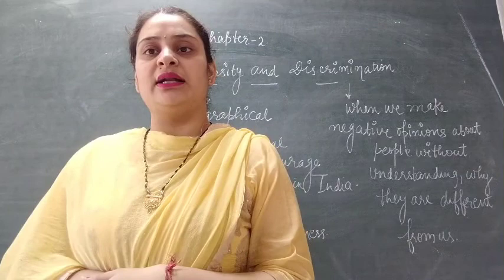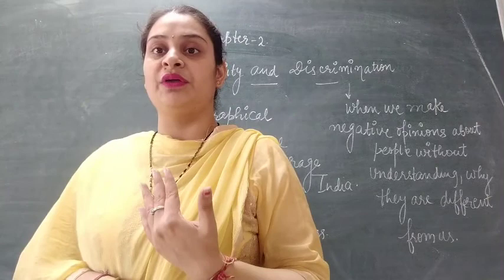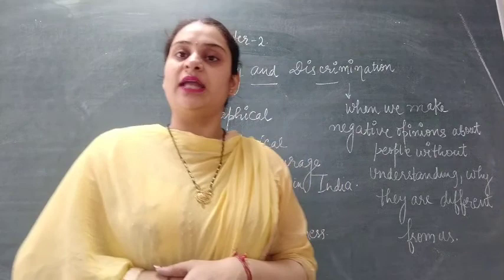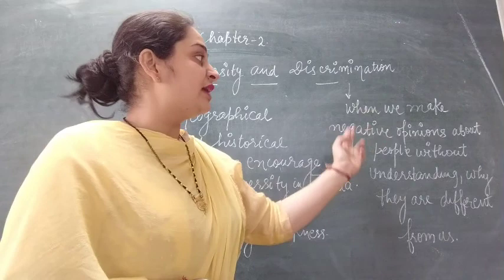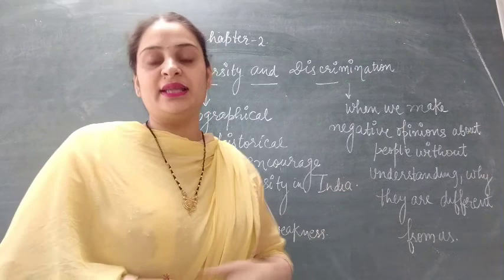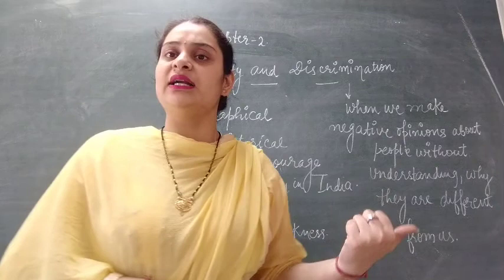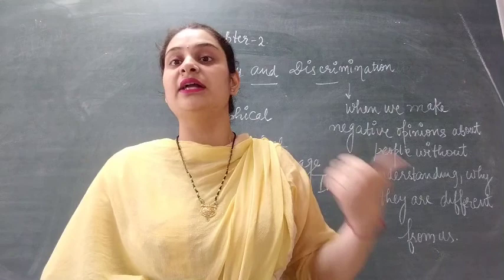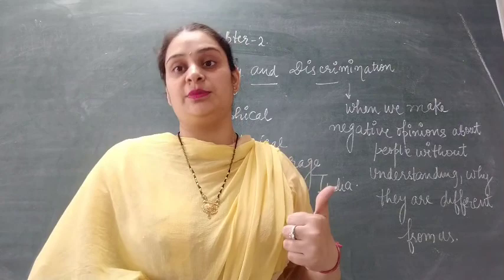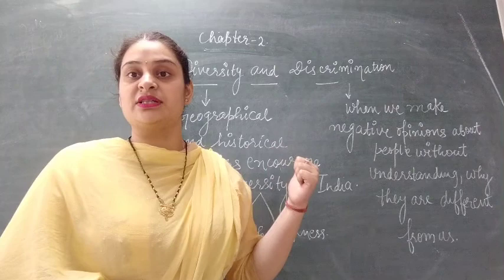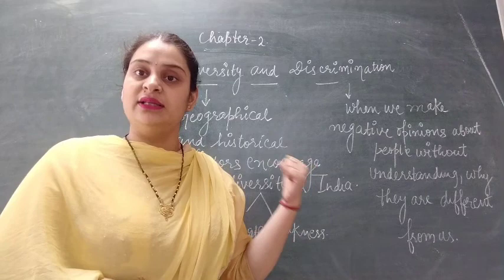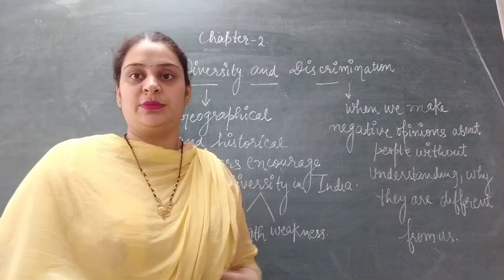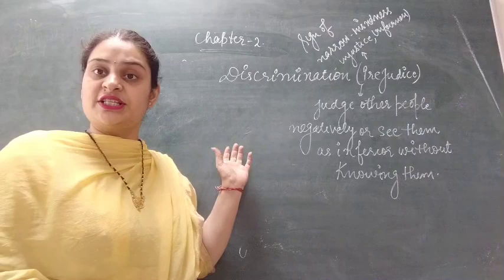But when we are talking about diversity in a negative way, we call it a weakness. When we are unable to understand the importance of different factors, diversity falls under the category of weakness. And when diversity is viewed with a negative opinion, it becomes discrimination. So this is the basic idea behind this chapter: diversity and discrimination. Diversity is a positive aspect, but when talked about negatively, it becomes discrimination.